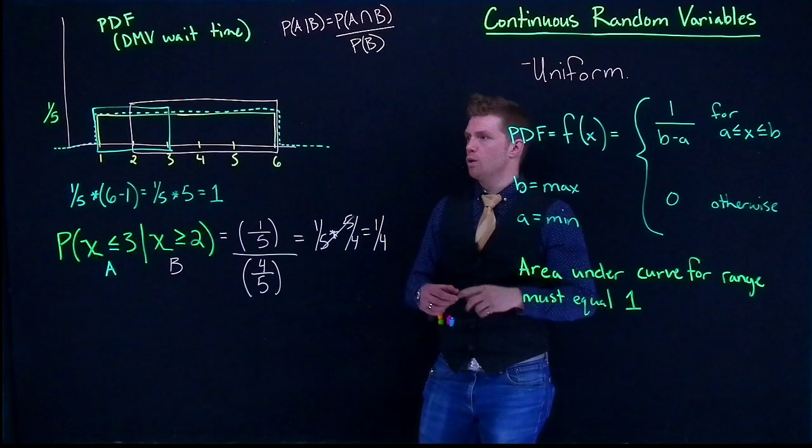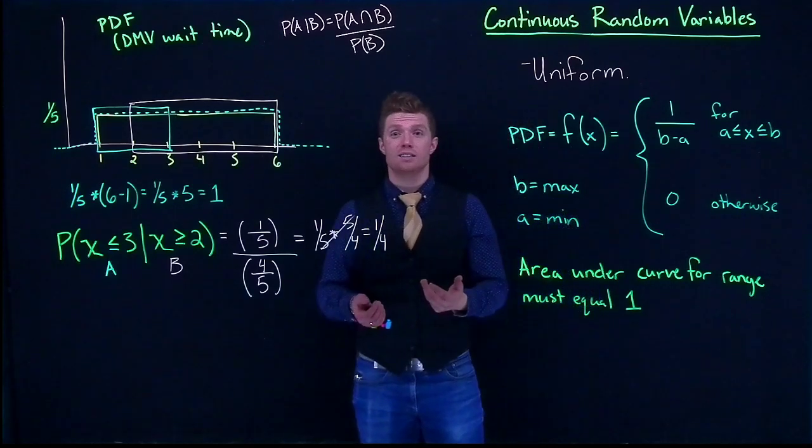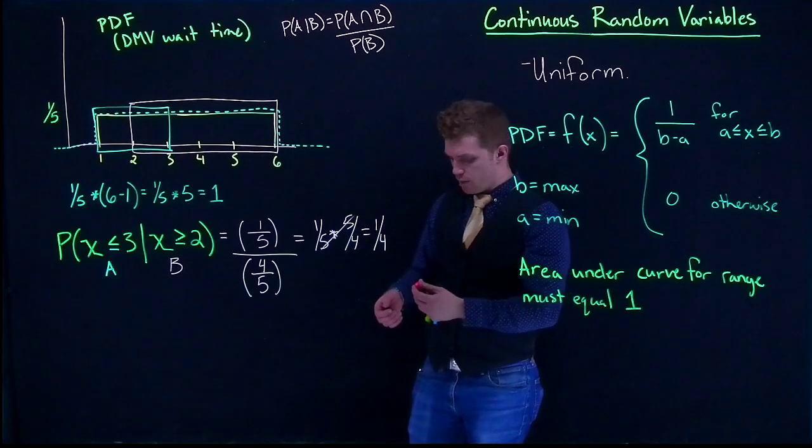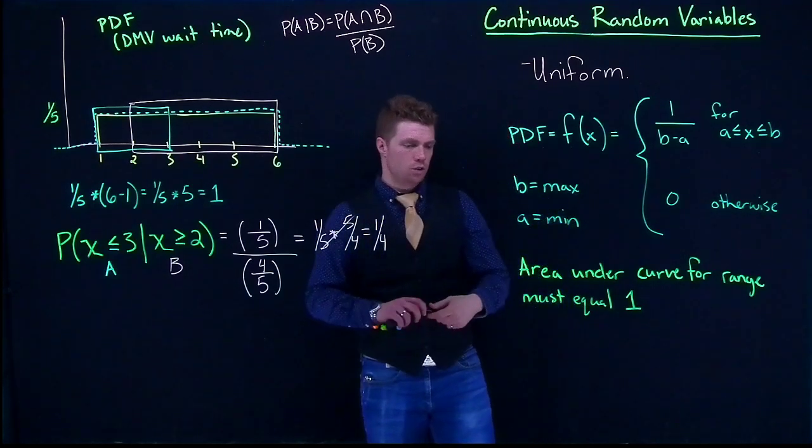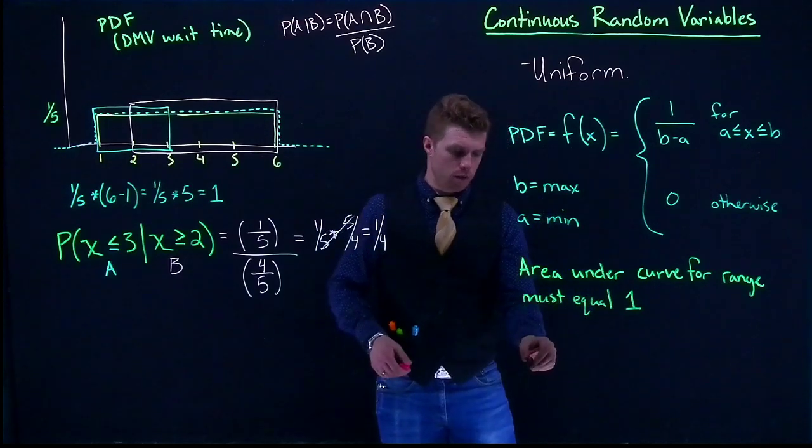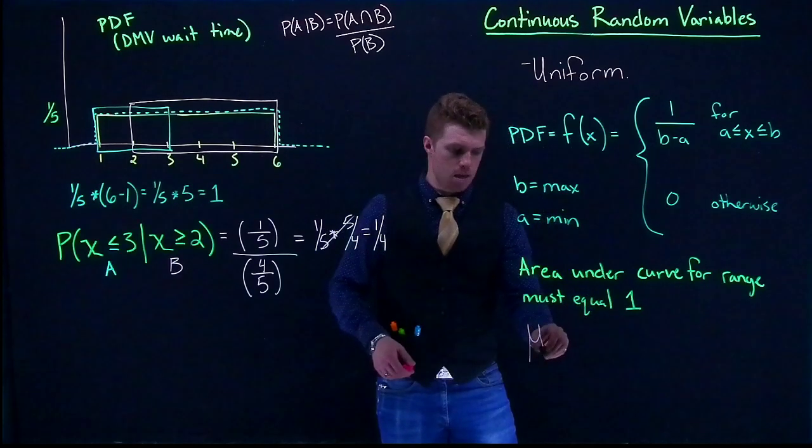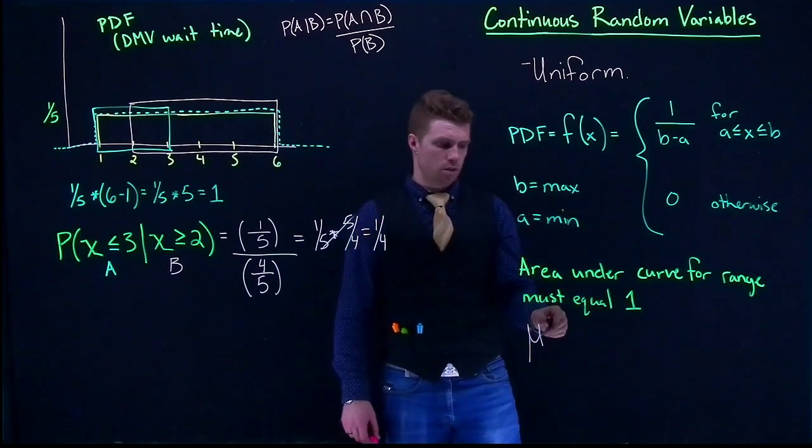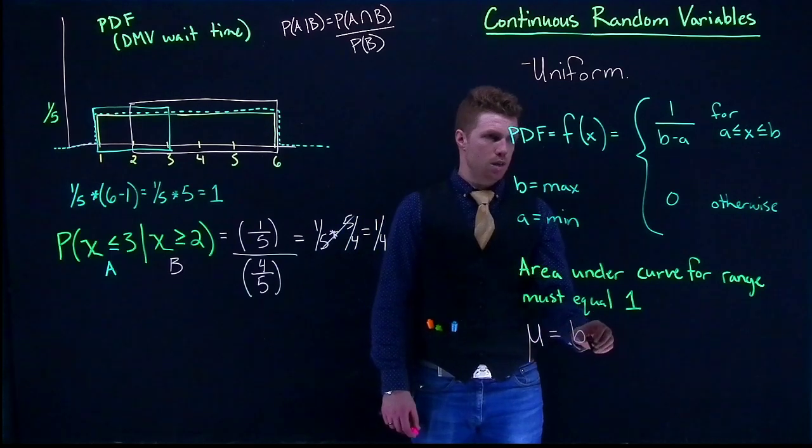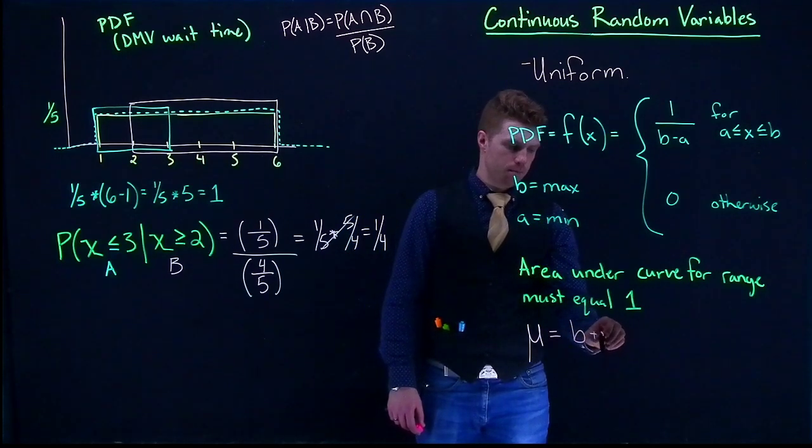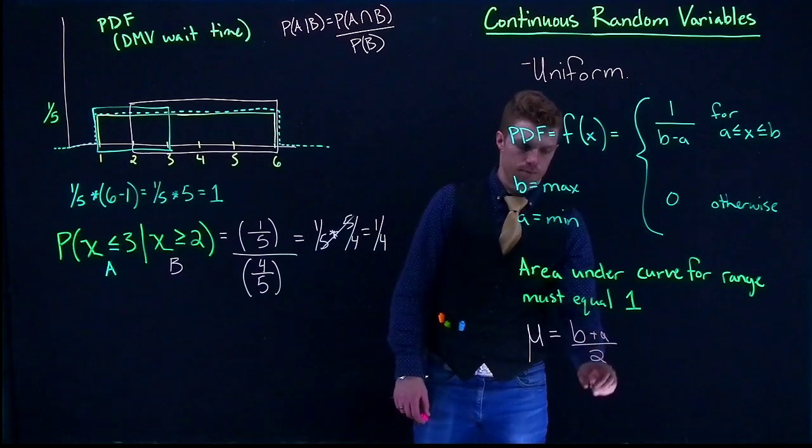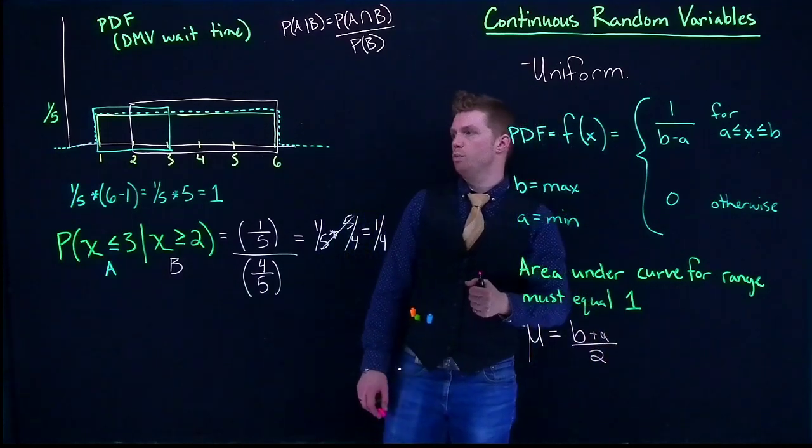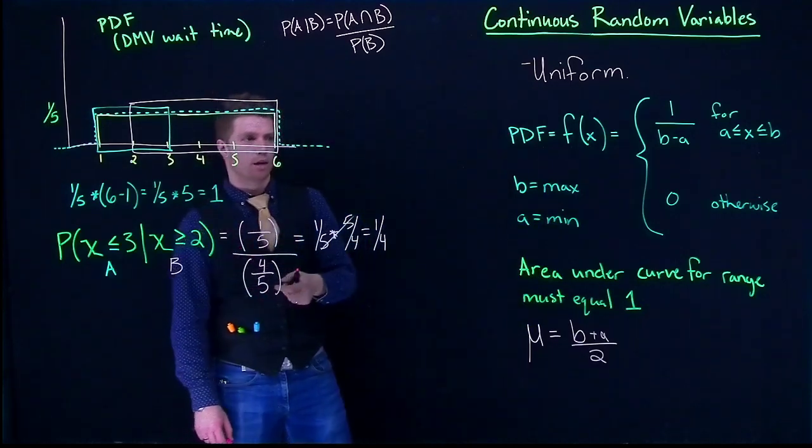The last two things that I want to cover is how do we solve for the mean and how do we solve for the standard deviation. For the uniform distribution, we have a couple of handy equations. We can just say that mu here, or that the mean of our wait time for a uniform distribution when it's continuous, is just equal to b plus a divided by 2. So we could figure out what this is, 6 plus 1 is 7, so our mu is going to be 3 and a half.